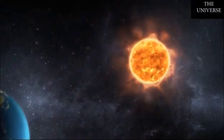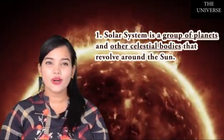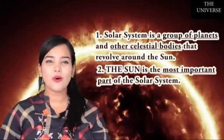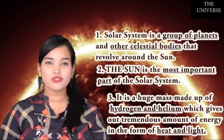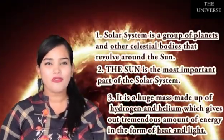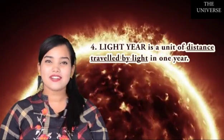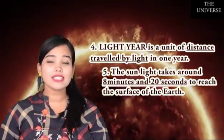Let's quickly summarize what we have studied in today's session. Number one: the solar system is a group of planets and other celestial bodies that revolve around the Sun. Number two: the Sun is the most important part of the solar system. Number three: it is a huge mass made up of hydrogen and helium, which gives out tremendous energy in the form of heat and light. Number four: a light year is a unit of distance traveled by light in one year.